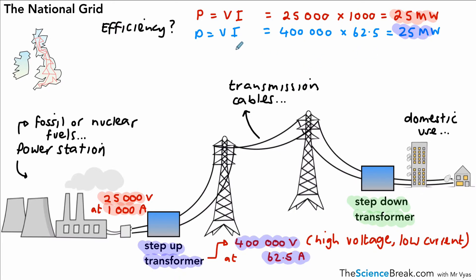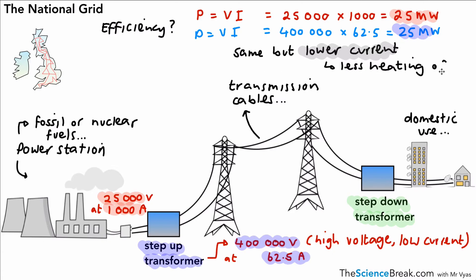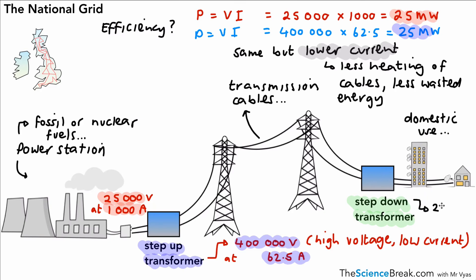However, the second scenario is much better because we have the same power but a lower current. That's achieved by having a higher voltage and a lower current to achieve the same power. Having a lower current is really useful because it generates less heat in the transmission cables. That means less heat is wasted to the surroundings, or less heat is transferred to the surroundings by heating the air. We eventually reach the step-down transformer, which brings the voltage down to a safe 230 volts for use in your home — to charge your phone, watch TV, and so on.